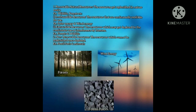Renewable natural resources are those that get replenished in nature easily — examples: wildlife, forest, etc. Inexhaustible resources are those continuously available for use, such as solar energy and wind energy. Exhaustible resources are those which may get depleted by continuous use or interference by humans — examples: forest and wildlife.